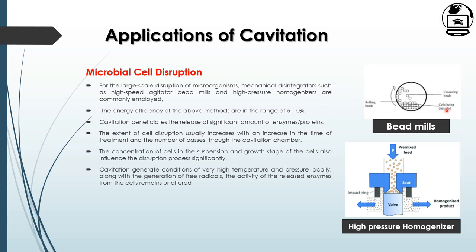Bead mills contain grinding chambers with a rotating shaft running at their center. The energy efficiency of these methods includes the process of disruption rate, as there is bead-to-bead interaction in case of bead mills.